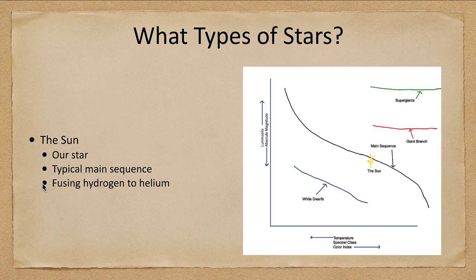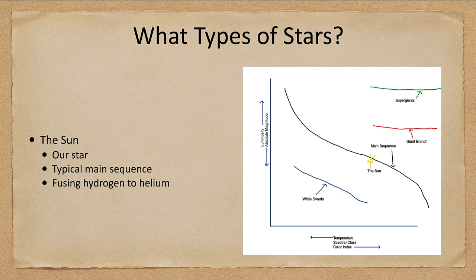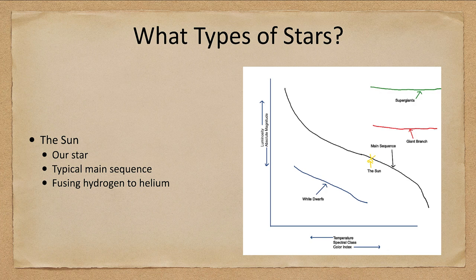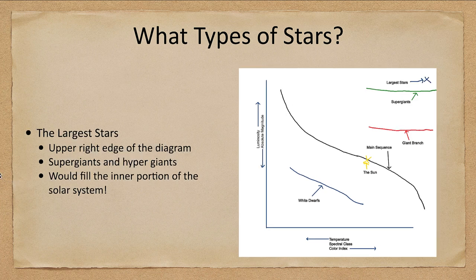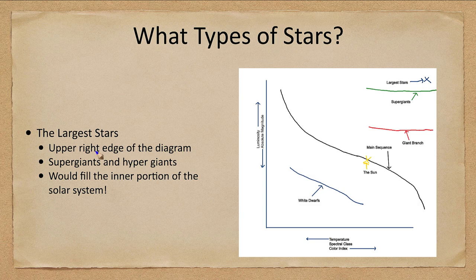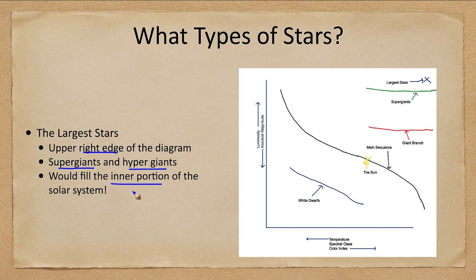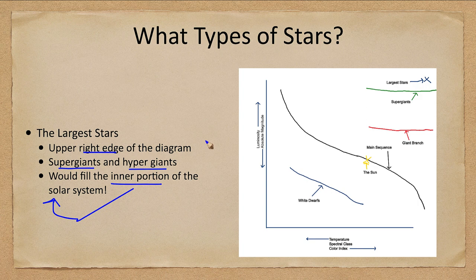Now, we see the sun located there on the main sequence, pretty much in the middle range of a relatively typical star. And the largest stars up to the upper right edge of the diagram, those are supergiants and hypergiants. These are things that would fill the inner portion of the solar system. These are incredibly large stars. And the further you get up to this corner, the larger the stars are.